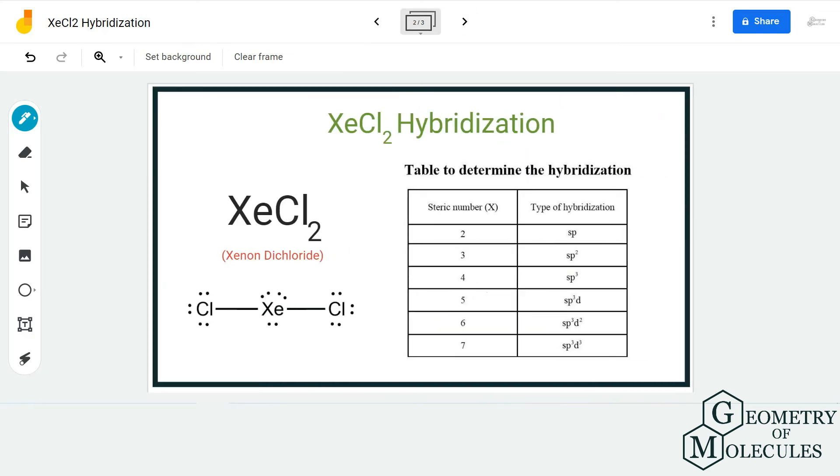Now referring to this table, we can see that steric number 5 corresponds to sp3d hybridization, and hence the hybridization for the xenon atom in this molecule would be sp3d.